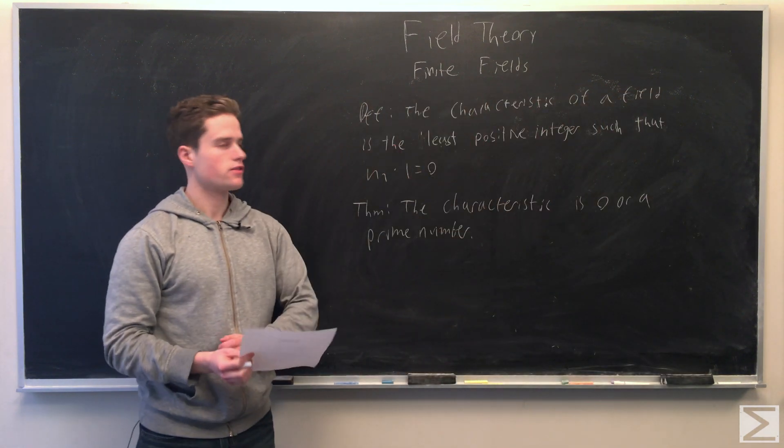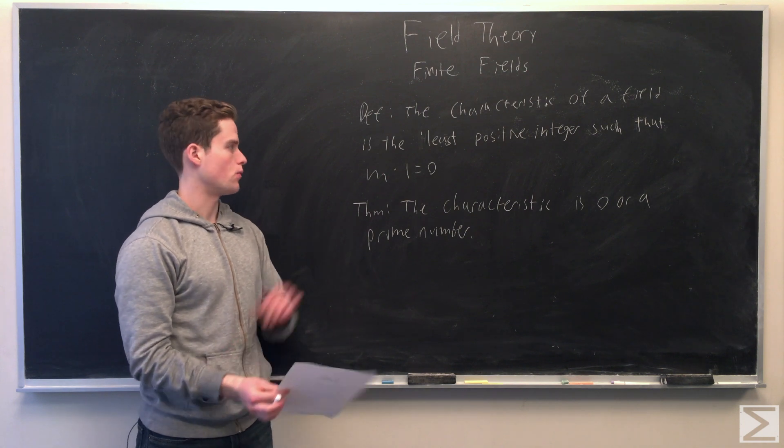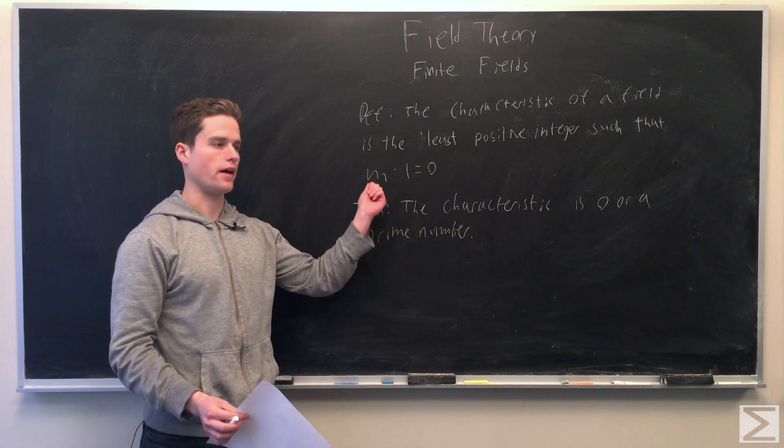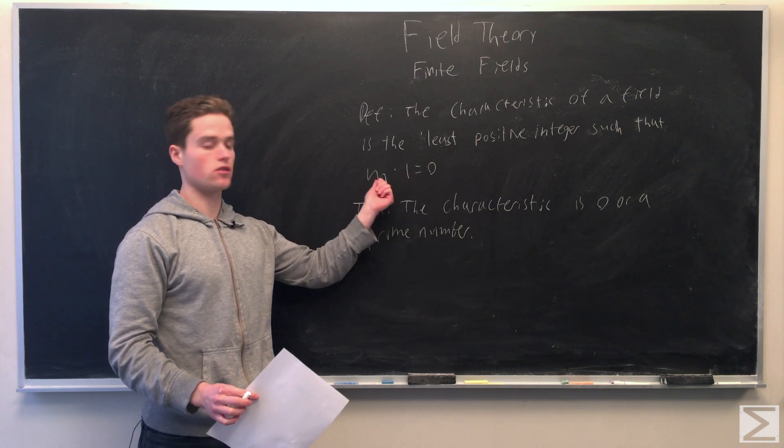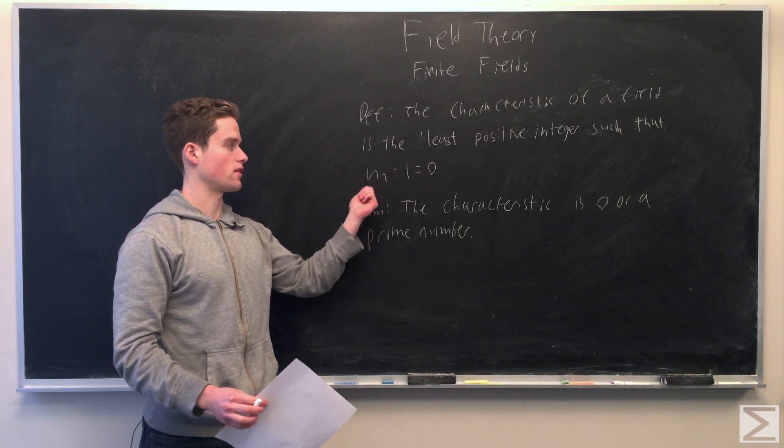The characteristic of a field is the least positive integer such that one added to itself m times, this positive integer number of times, gives us zero. If there is no such integer then we say the characteristic is zero.